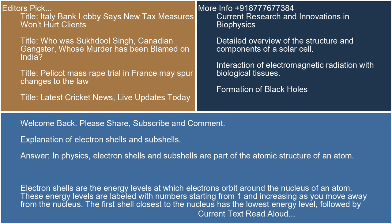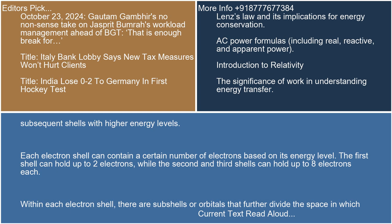In physics, electron shells and subshells are part of the atomic structure of an atom. Electron shells are the energy levels at which electrons orbit around the nucleus of an atom. These energy levels are labeled with numbers starting from 1 and increasing as you move away from the nucleus. The first shell, closest to the nucleus, has the lowest energy level, followed by subsequent shells with higher energy levels.